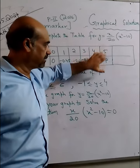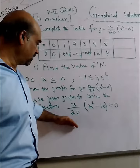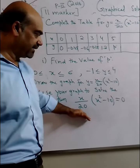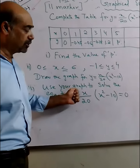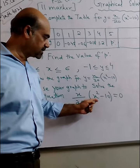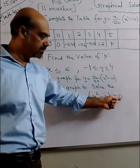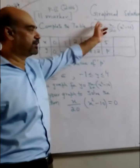We have completed the table of values. Now we are coming to part C, which is saying solve the equation by using your graph. What is the equation? x upon 20, x square minus 10 equals 0. Just look at the original equation which is given.